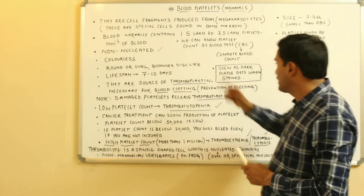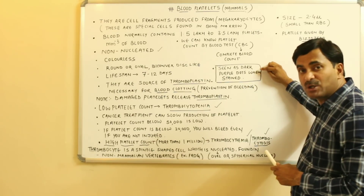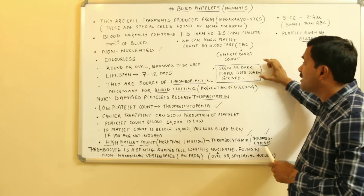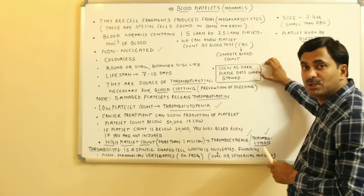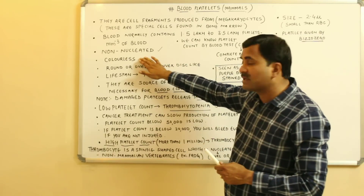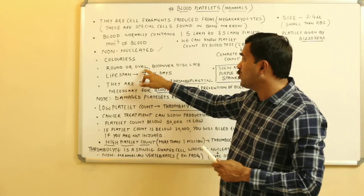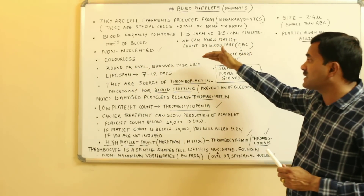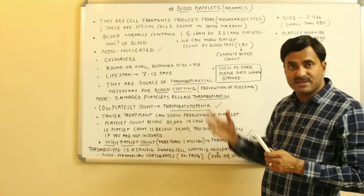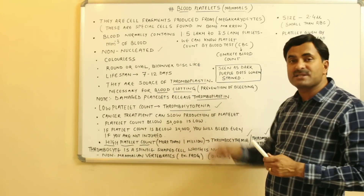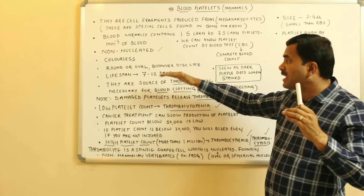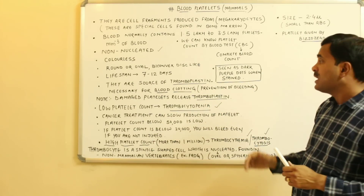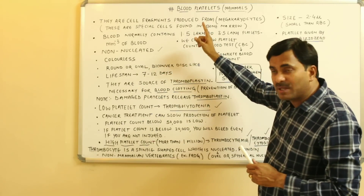Platelets are colorless, but when stained they appear as dark purple to blue dots. In terms of shape, they are round or oval, biconvex, disc-like. Their lifespan is 7 to 12 days; on average, the lifespan of blood platelets is approximately 8 days.